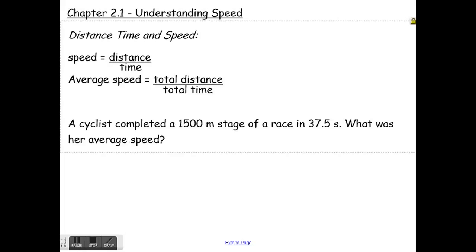So a cyclist completed a 1500 meter stage of a race in 37.5 seconds, what was her average speed? Just take distance, total distance divided by total time, and that gives us a number, the average speed.